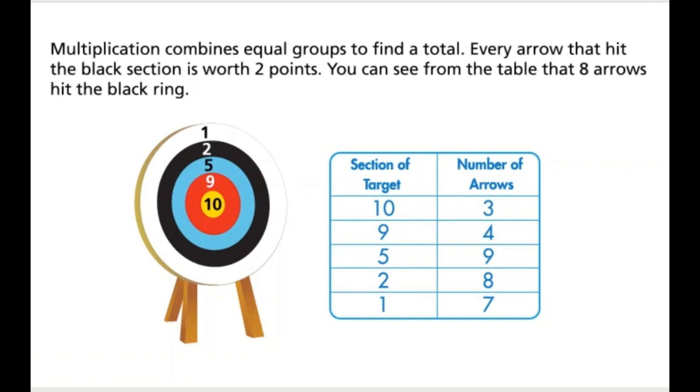Multiplication combines equal groups to find a total. Every arrow that hit the black section is worth 2 points. You can see from the table that 8 arrows hit the black ring.